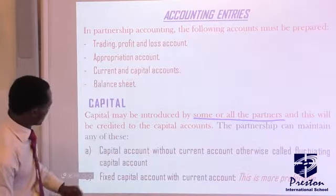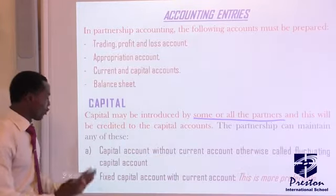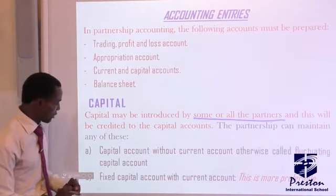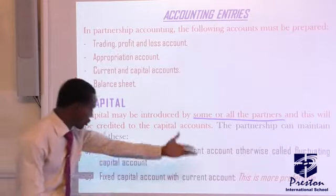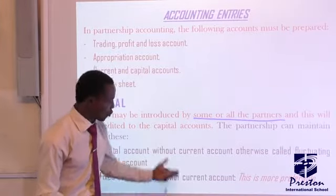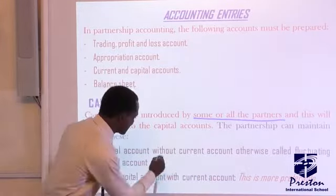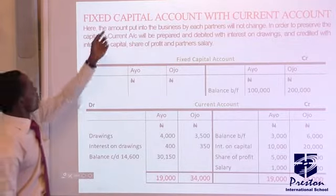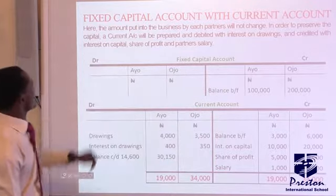The partnership can maintain any of these two accounts: number one, the fluctuating capital account — that is, the capital account without a current account; and number two, the fixed capital account — that is, the capital account with a current account.